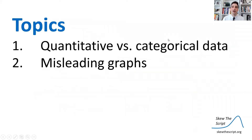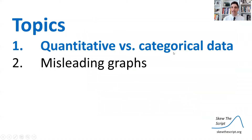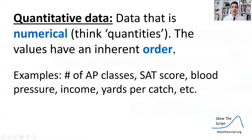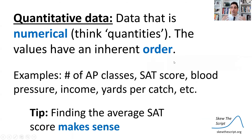First we're going to talk about classifying data and variables between quantitative and categorical. Quantitative data is data that is numerical — think quantities, quantitative. The values have an inherent order. For example, number of AP classes you're taking, SAT score, blood pressure, etc. Those are numerical variables that have an order of higher and lower. A good way to tell if a variable is quantitative is to find the average and see if it makes sense. For example, I can find the average SAT score among a bunch of students and it would make sense to do so.